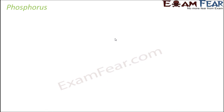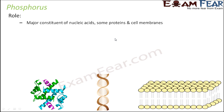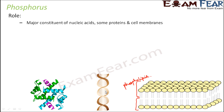Let us look at the next element, phosphorus. The role of phosphorus: it is a major constituent of nucleic acids, some proteins, and cell membranes. The basic structure of a plasma membrane is a lipid bilayer — two layers of lipids — made up of phospholipids, where the lipids have a phosphate group attached. So phosphorus is present in the cell membrane. In nucleic acids, whether DNA or RNA, there are phosphate linkages, so phosphorus is present there also. Some proteins also contain phosphorus.